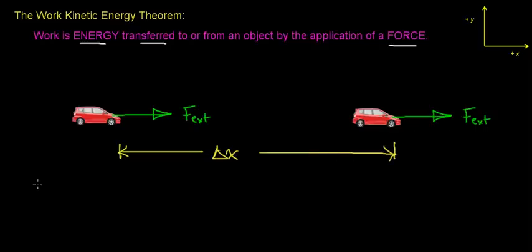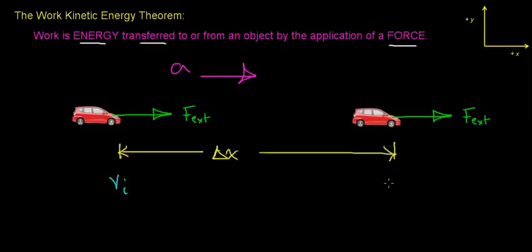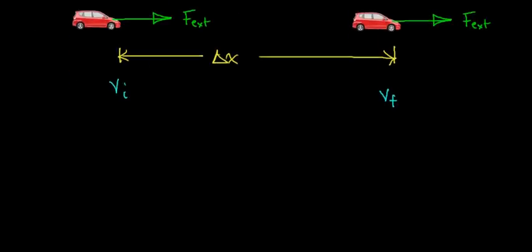From Newton's second law of motion, forces cause objects to accelerate in the direction of the net external force. So this external force is going to cause this car to accelerate in the forward, positive x direction. Forces cause objects to speed up, slow down, or change direction, so this force is going to change the car's velocity from some initial value to some final velocity.